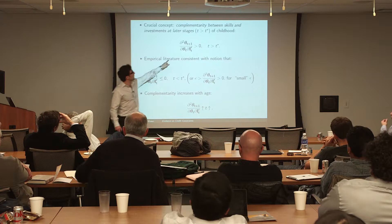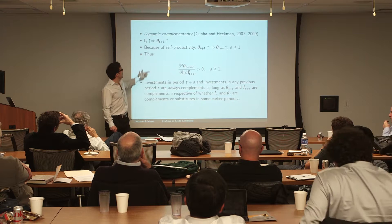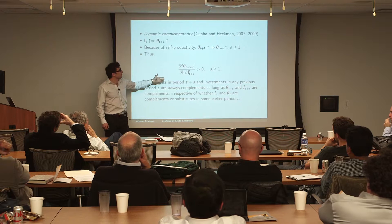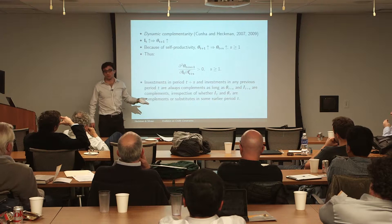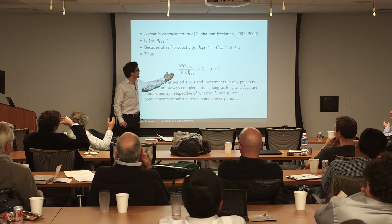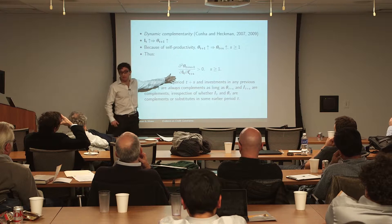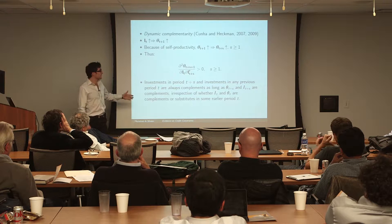The second aspect is dynamic complementarity, which follows from the static complementarity between skills and investment. By investing today and increasing skills tomorrow, there is a direct and indirect effect on skills over all future periods, making investment in all future periods more productive. This comes straightforwardly from the assumption that if there is complementarity between skill and investment and skills are increasing in investment, dynamic complementarity follows. It is not a new empirical finding — it is a consequence of the complementarity in later ages between skills and investments.